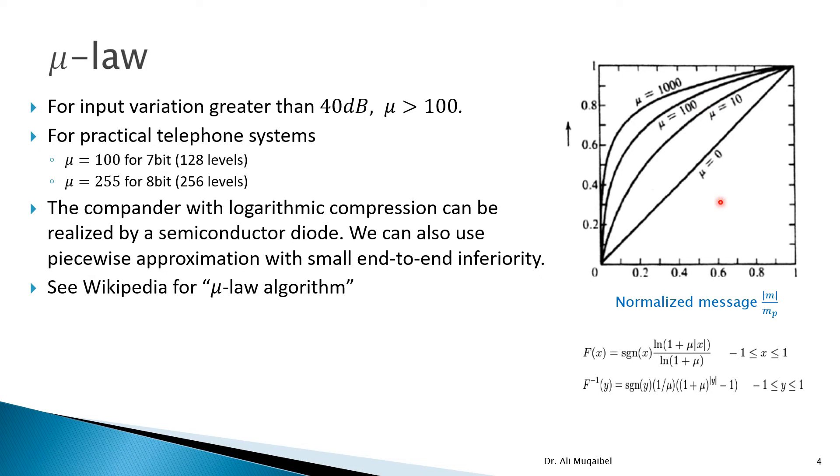Now, the decompression equation, if somebody gives you this compressed signal and you want to go back, we can use the inverse equation as given here, and we get our signal back, of course, the normalized one. Now, which one do we choose, 100 or 100, and so on? If the variation is high, which means you have very large signals and very small signals, like up to 40 dB, you can use mu greater than 100. For practical telephone systems, the used values, depending on the number of quantization bits on the quantizer, we have either 100 or 255.